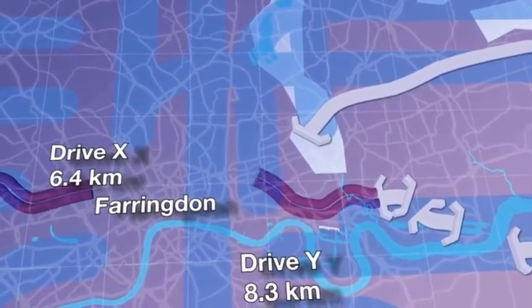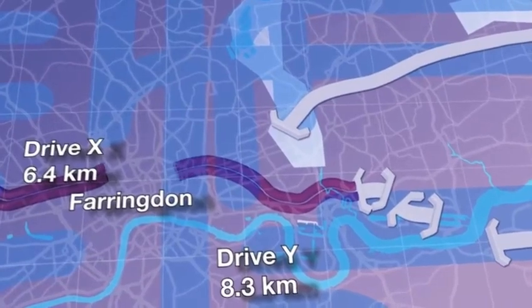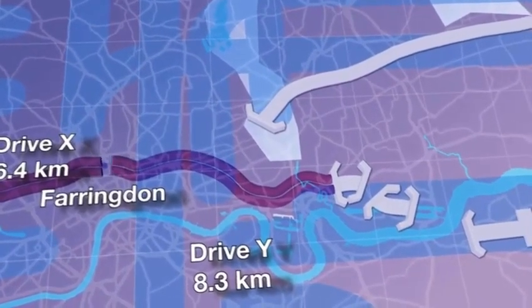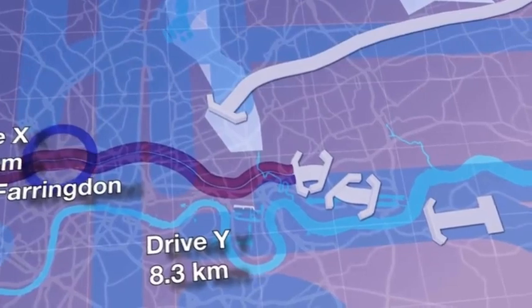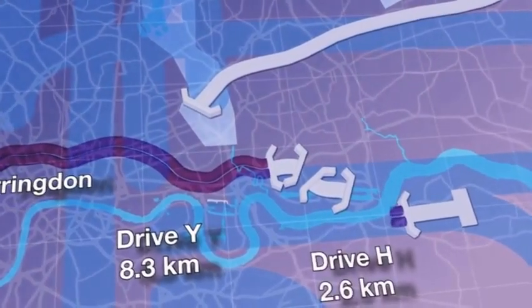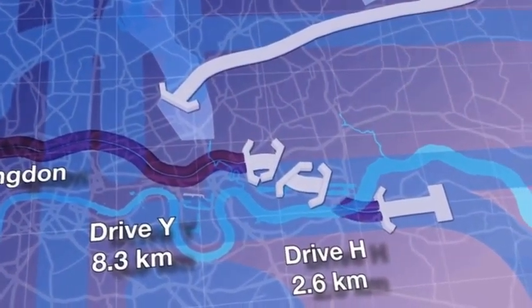A second pair of TBMs, Elizabeth and Victoria, will construct Drive Y, starting from Limmo in Docklands and heading under central London to Farringdon.